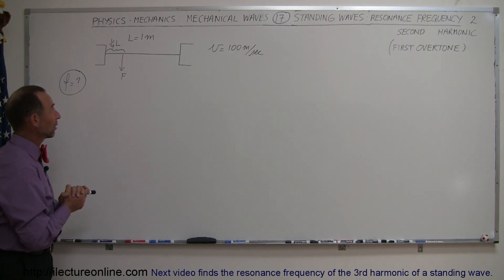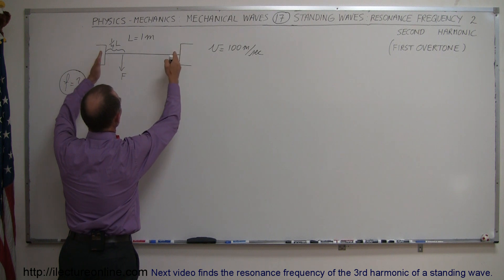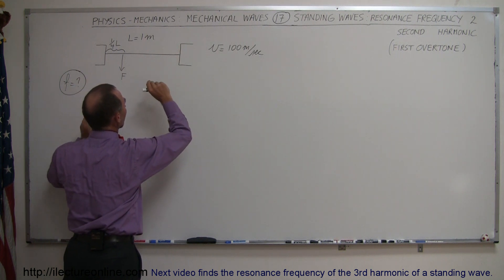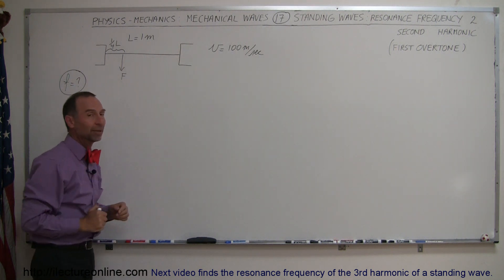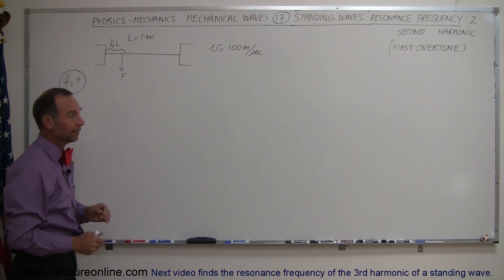So, here we have a situation where we have a string placed between two strong blocks. We put enough tension on the string so that we have a velocity of 100 meters per second. The blocks are 1 meter apart, so the length of the string is 1 meter.